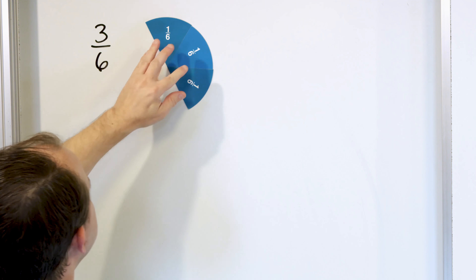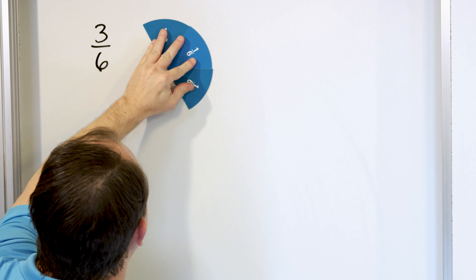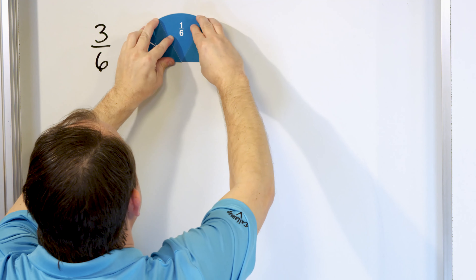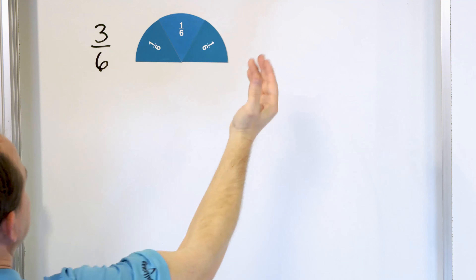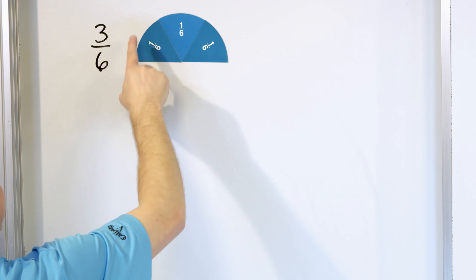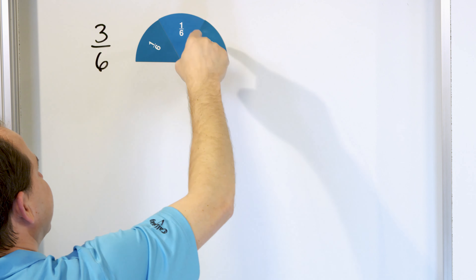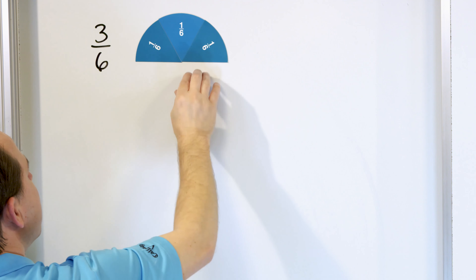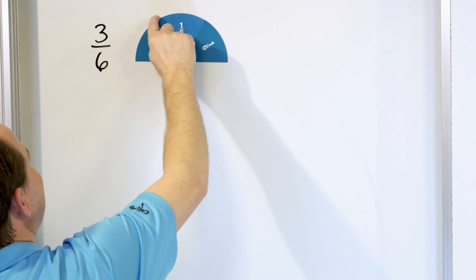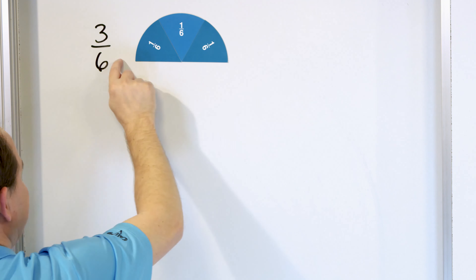If I turn it this way, it might help see it a little better. What does that actually look like to you? Well, three-sixths — one-sixth, two-sixths, three-sixths, here it is — but what does it look like? It looks exactly like half of a pizza.